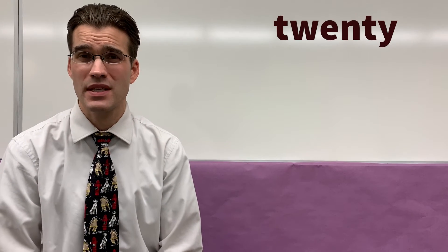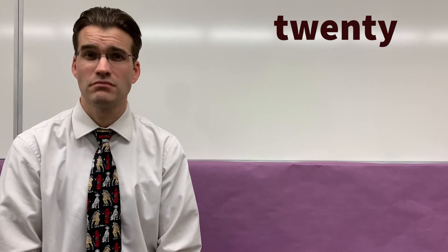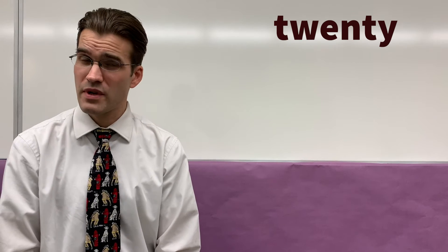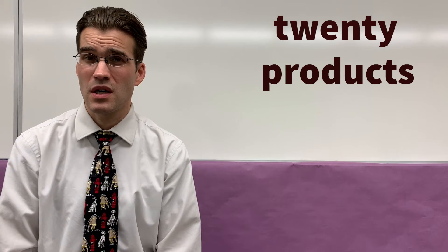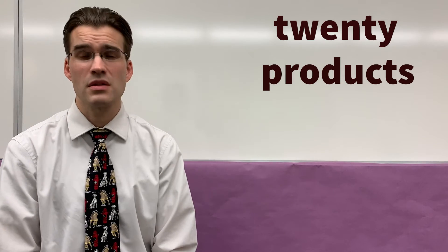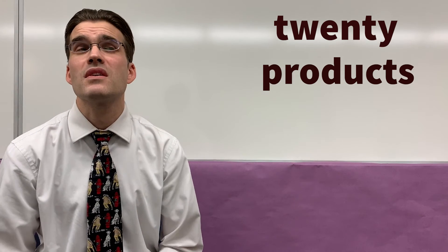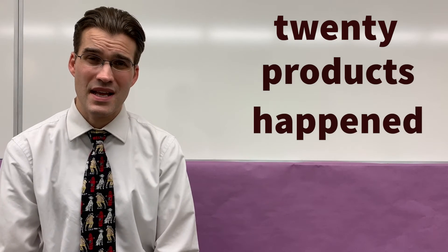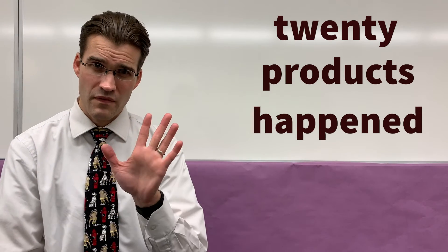Now, spelling words. Fourth graders, here we go. First spelling word is the number 20 — twenty. Second fourth-grade spelling word is 'products,' like 'I go to the store and buy some products.' And the third word is 'happened' — 'it happened to me.'